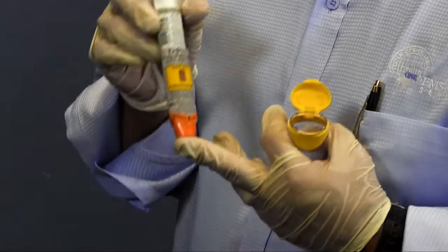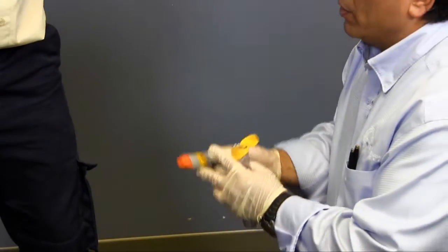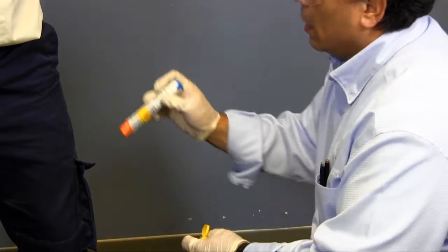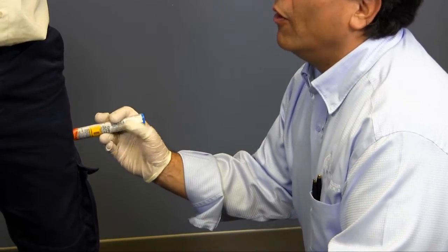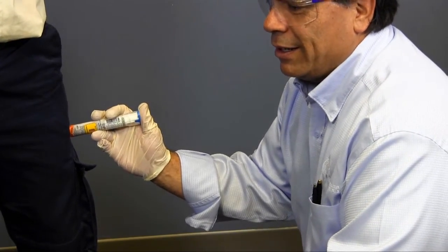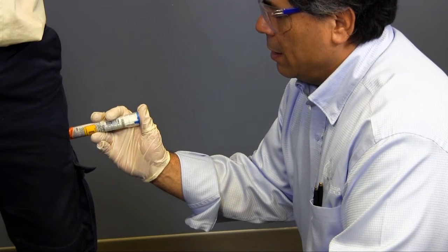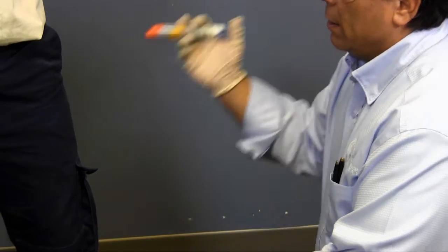I call medical control for an order to administer the autoinjector. Once I have the order, I remove the safety cap and insert the autoinjector pen firmly into the lateral thigh. Hold it there for 10 seconds confirming the medication is administered.